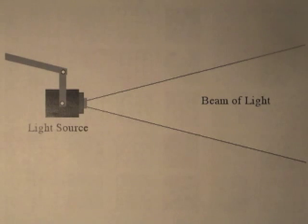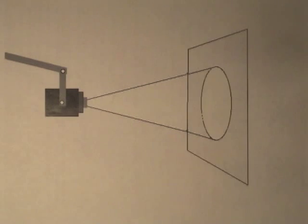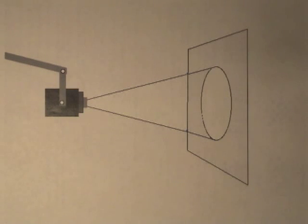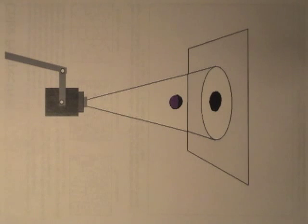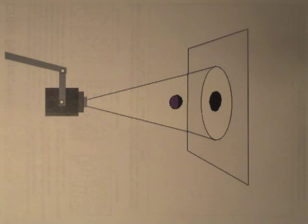What is a shadow? Well, to see one, we have to have a light source that produces a beam of light. We see that beam of light when it hits a surface and is illuminated. A shadow is formed when some object blocks part of that stream of light. Therefore, when the light hits an object or a surface, there is a spot that does not get illuminated. This is the shadow.